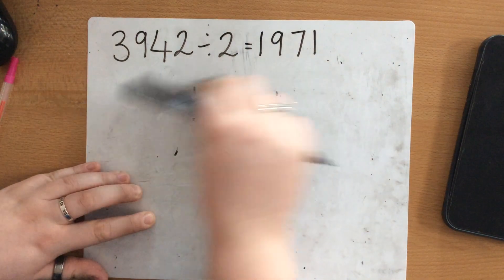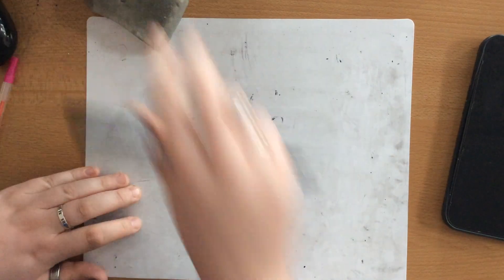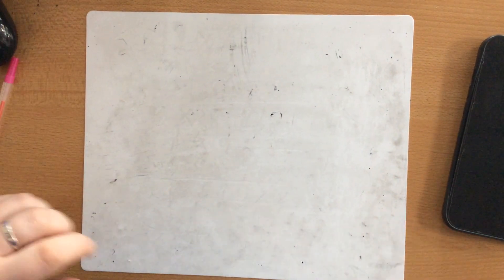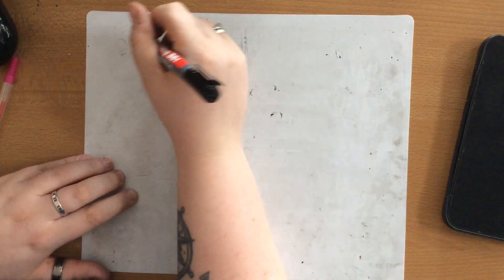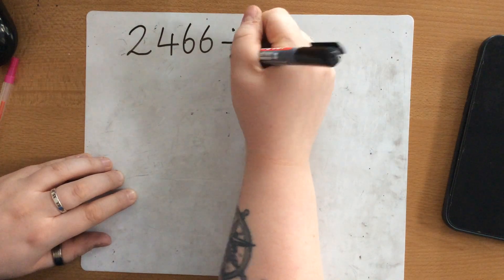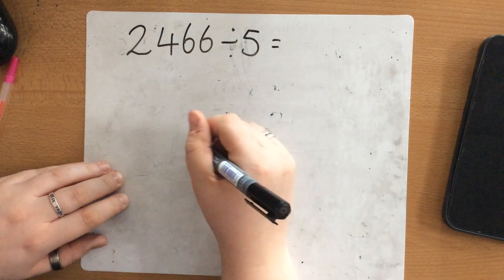Now let's have a look. If you were to have a question and it does have a remainder. Just going to check you can still see on the screen. Let's do 2,466 divided by 5. So same method again.